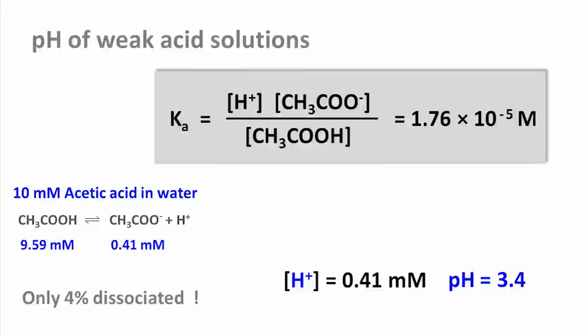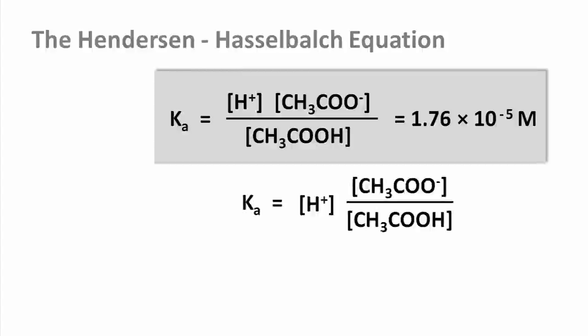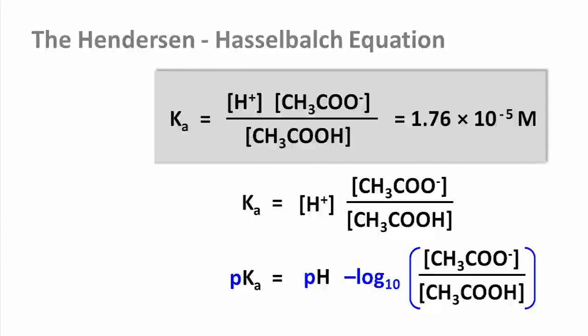Now this is not a kind of calculation that we need to do often, but the equation for the acid dissociation constant can be rearranged in a way that makes it very useful. We can rewrite this equation and now take the negative logarithm base 10 on both sides. The proton concentration becomes the pH, the acid dissociation constant now becomes pKa, and the ratio of conjugate base to acid concentration becomes this term in brackets.